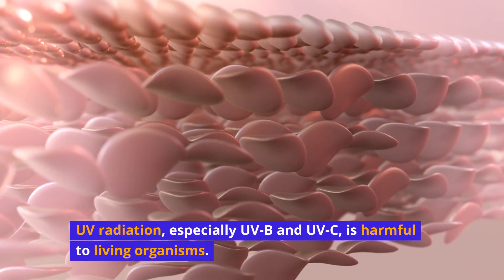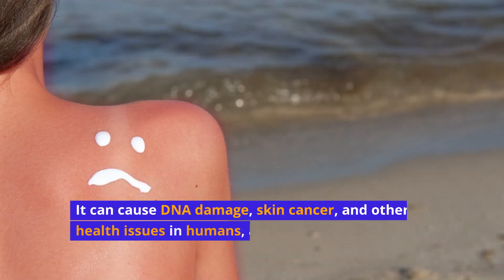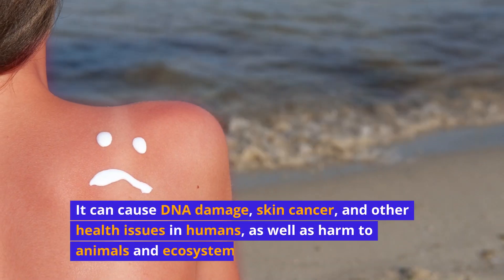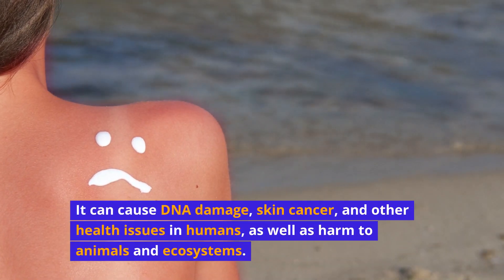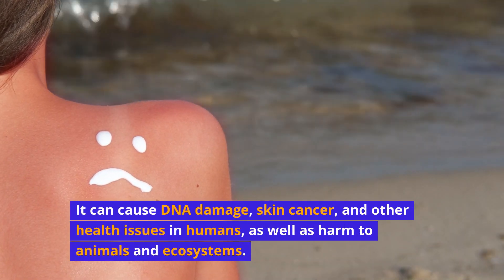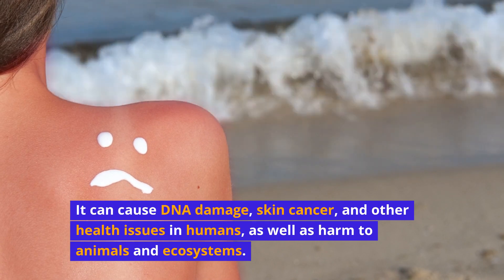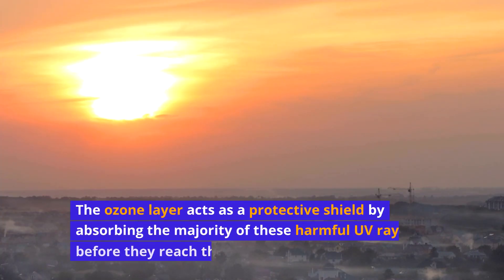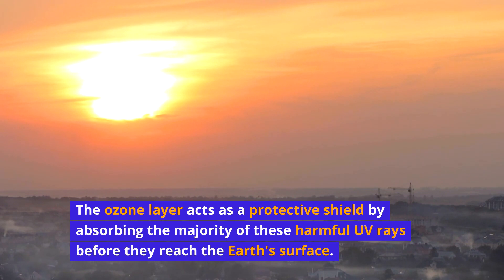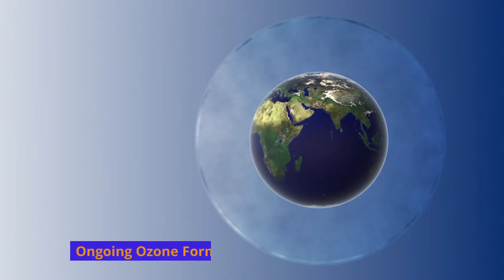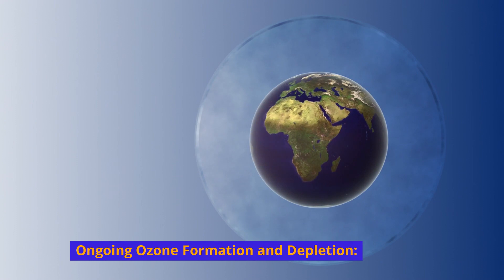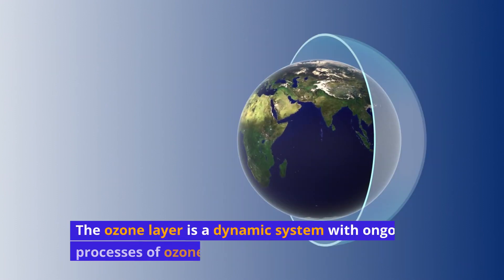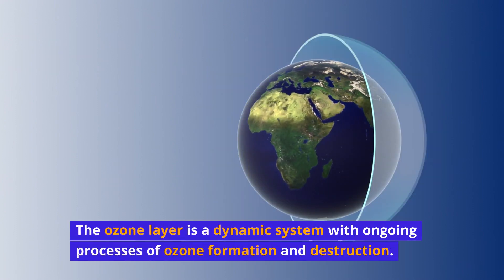UV radiation, especially UVB and UVC, is harmful to living organisms. It can cause DNA damage, skin cancer, and other health issues in humans, as well as harm to animals and ecosystems. The ozone layer acts as a protective shield by absorbing the majority of these harmful UV rays before they reach the Earth's surface.